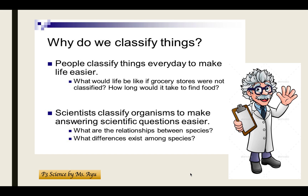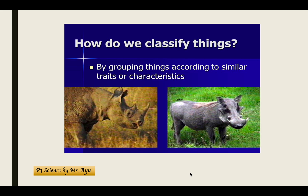How long would it take to find food if everything were mixed together? You need to find chili but it would be mixed with other vegetables, or you need to find lemon but it's hidden under other things. It would be very difficult. Scientists also classify organisms to make answering scientific questions easier, such as: what are the relationships between species, or what differences exist among species?